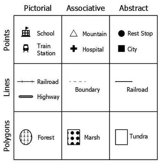Symbols take the form of words, sounds, gestures, ideas or visual images and are used to convey other ideas and beliefs. For example, a red octagon may be a symbol for stop. On a map, a blue line might represent a river. Numerals are symbols for numbers. Alphabetic letters may be symbols for sounds. Personal names are symbols representing individuals.